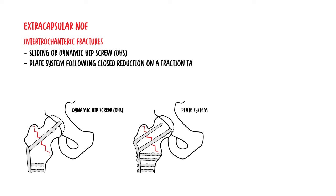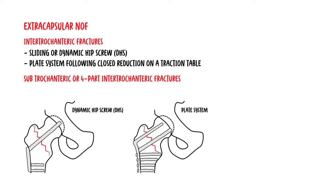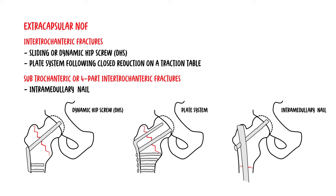For extracapsular neck of femur fractures, intertrochanteric fractures are usually managed with a sliding or dynamic hip screw and plate system, following closed reduction on a traction table. Subtrochanteric fractures, or a complex four-part intertrochanteric fracture, are managed with an intramedullary nail.